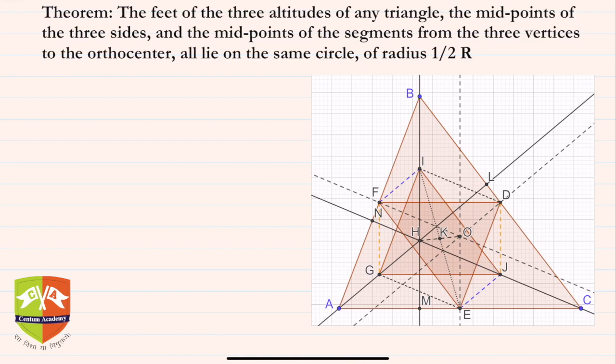What are the nine points? The nine points are: the three feet of the three altitudes of any triangle — in this case M, L, and N; the midpoints of the three sides, that is D, E, and F; and the midpoints of the segments from the three vertices to the orthocenter, namely G, I, and J.